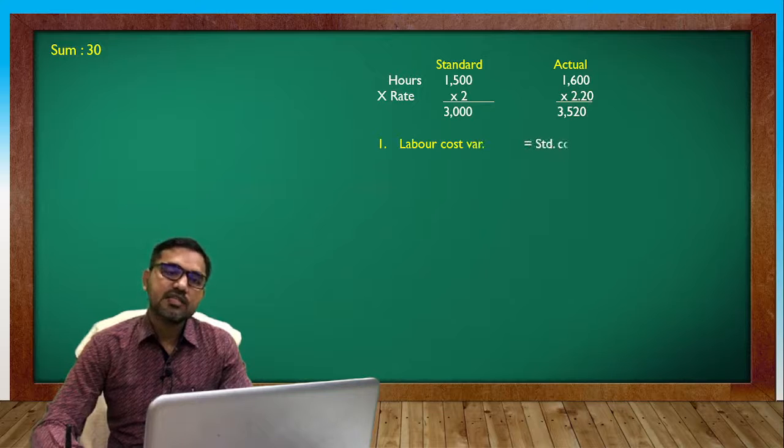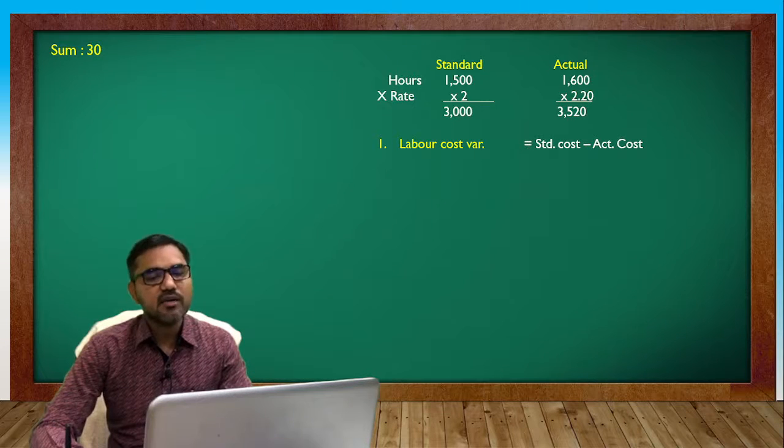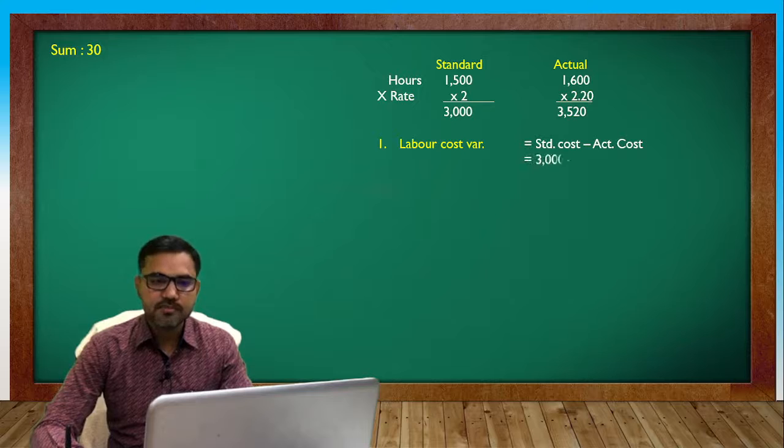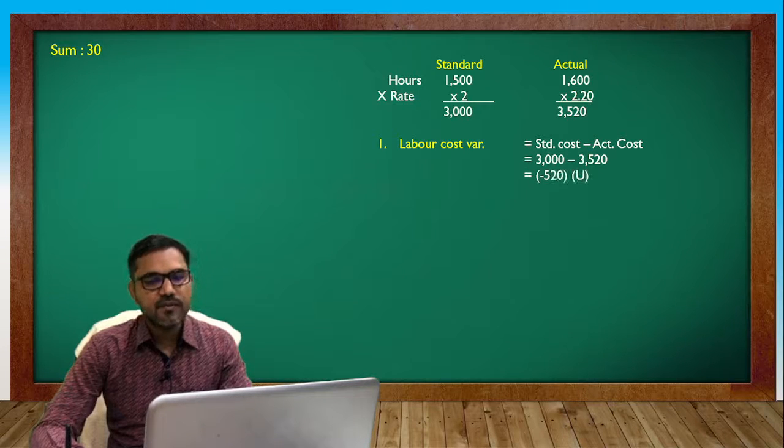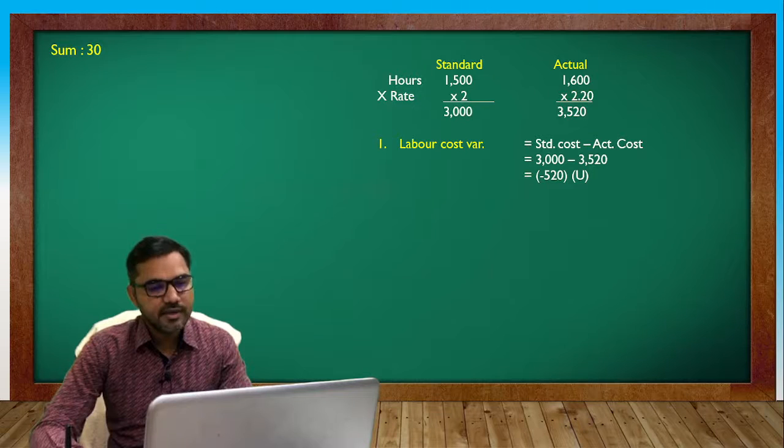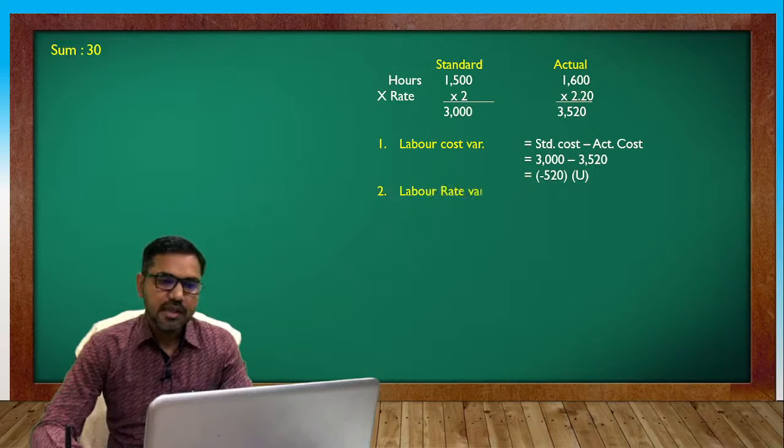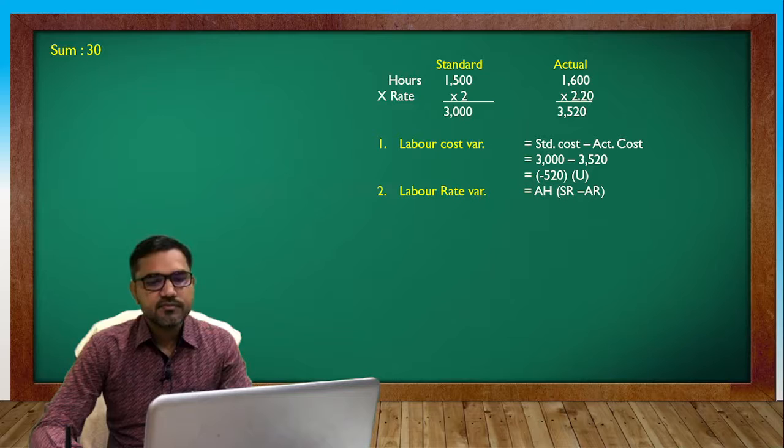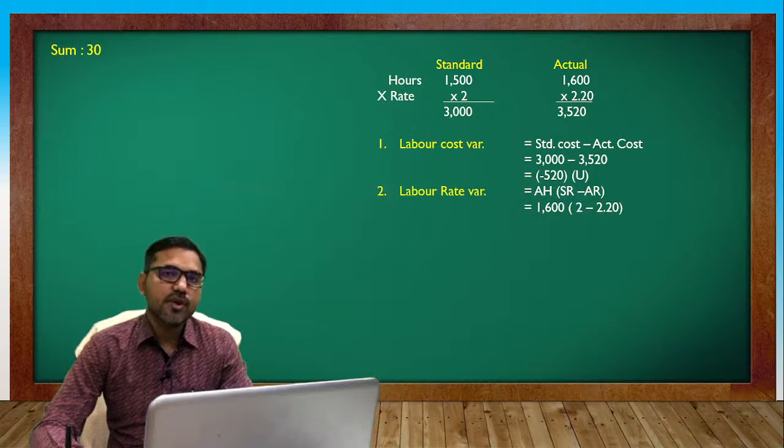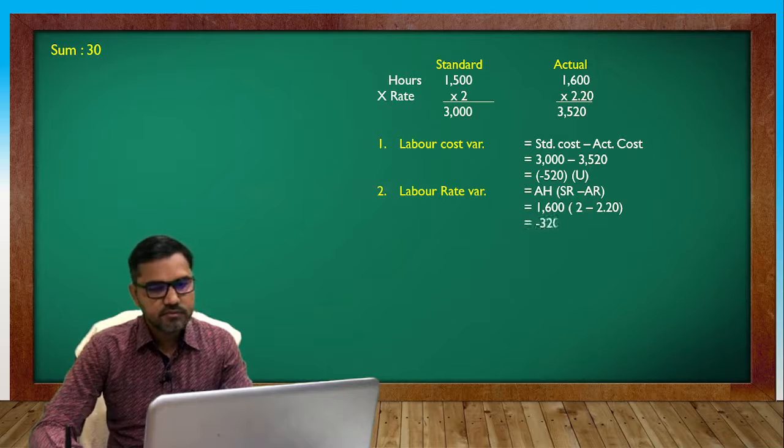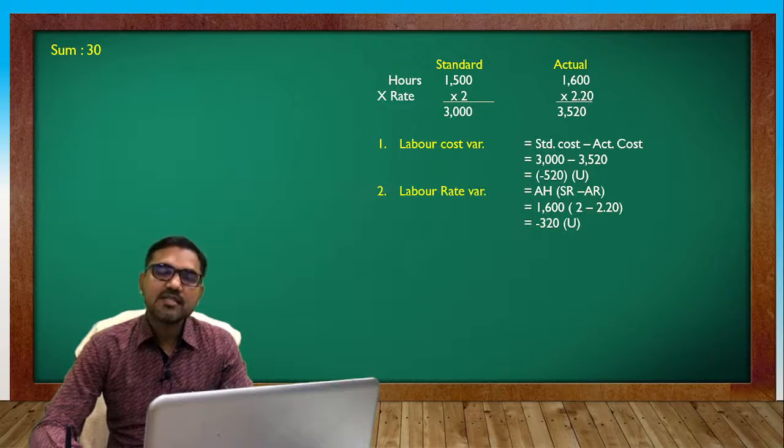Using the formula, first variance is labor cost variance: standard cost minus actual cost. 3000 minus 3520 equals minus 520. Labor rate variance: 1600 into 2 minus 2.20, so minus 320.